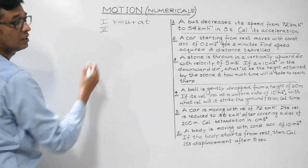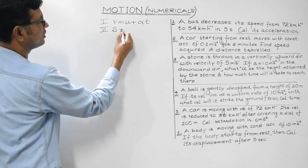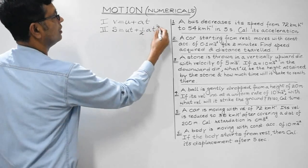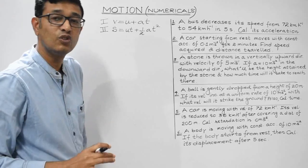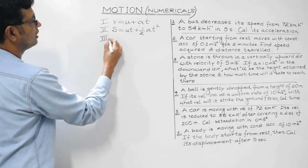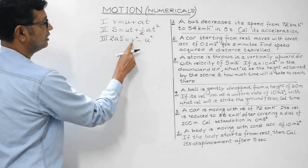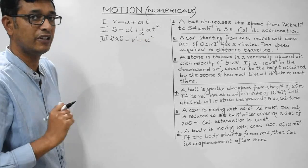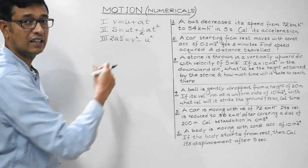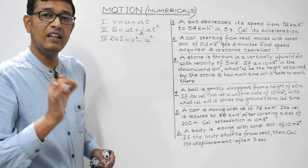The second equation of motion is the displacement-time relationship: S = ut + ½at², where S and t are the variables and u and a are constants. The third equation of motion is 2aS = v² - u², where v and S are variables, known as the displacement-velocity relationship. These three equations are collectively known as equations of motion, and they are valid only when acceleration a is constant.